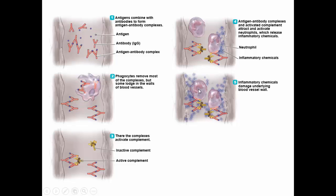In other words, these cells just continue to release inflammatory chemicals. Phagocytes come and eat the destroyed tissue, but they release more inflammatory chemicals, so we just keep the inflammation going.